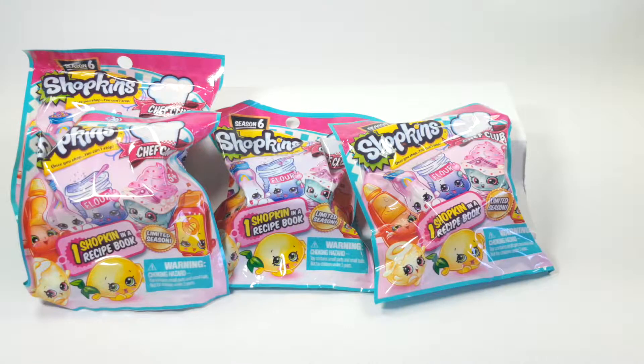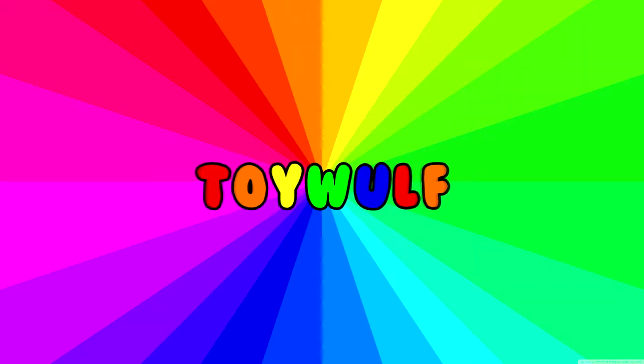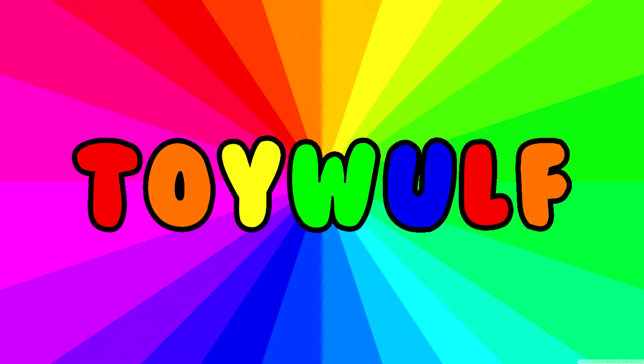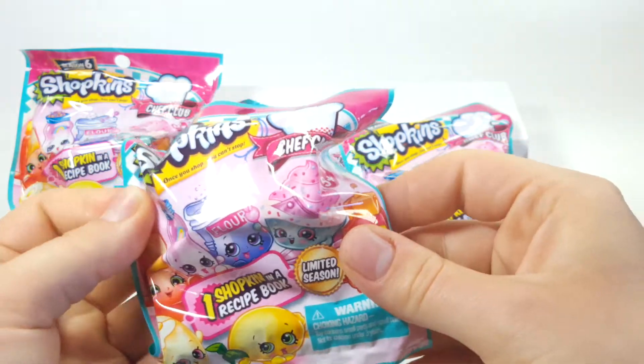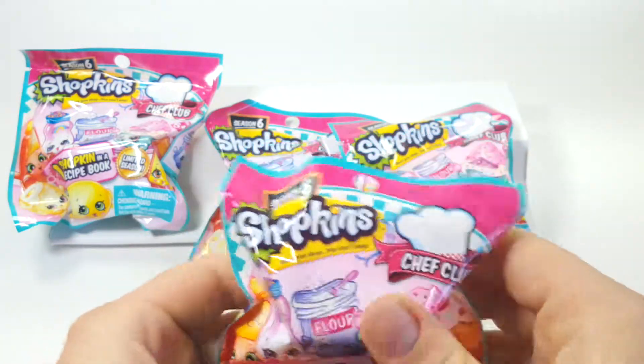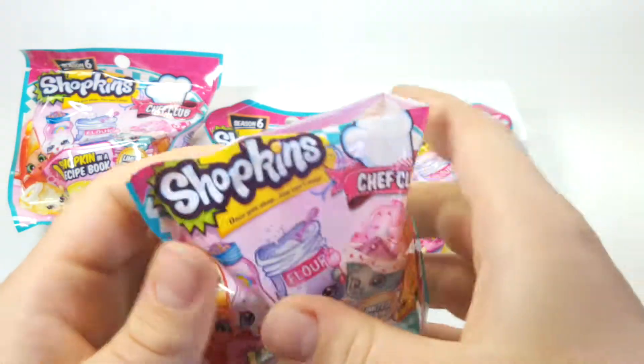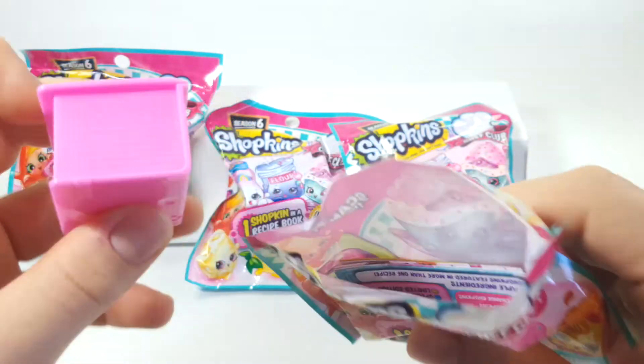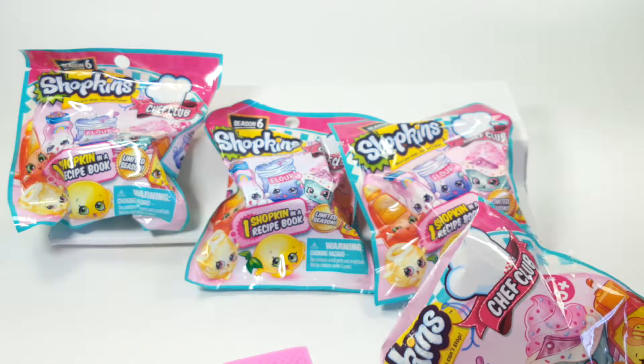Today we're going to open up some Shopkins Season 6 recipe books. These are packaged in blind bags and also in the recipe books. So let's open them and I'm going to just set up the recipe books on here real quick and I'll see you back in a second.